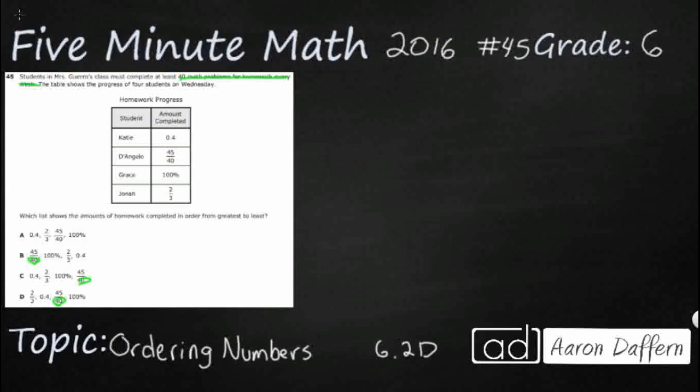Really, we're just looking at the progress of these four students: Katie, D'Angelo, Grace, and Jonah. And we need to do it from greatest to least. So since everything here is either decimal, it's going to be percent, or it's going to be fractions, there's our 40 right there. Then we're going to kind of ignore this 40 and we're just going to look at these amounts here.